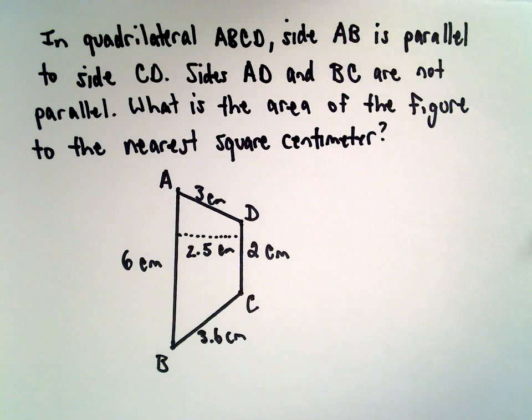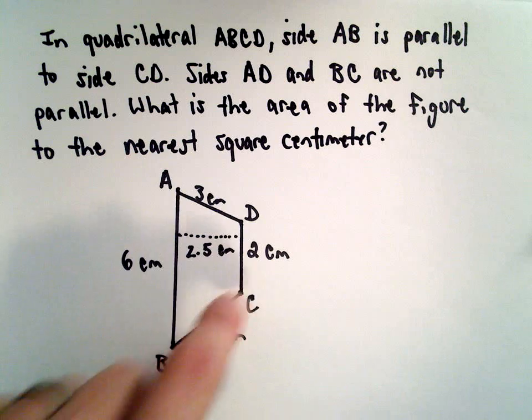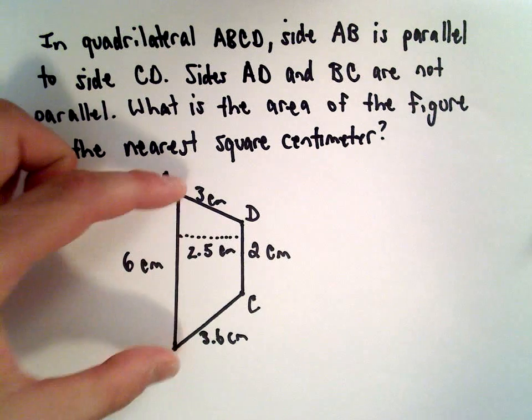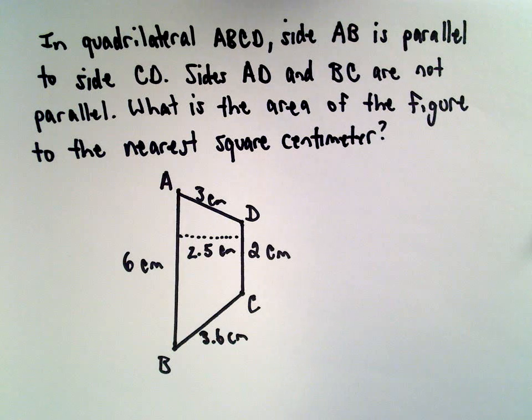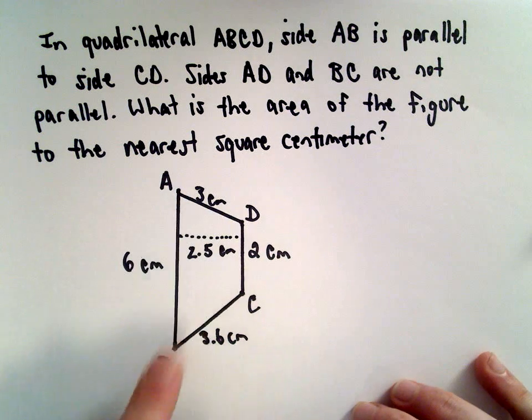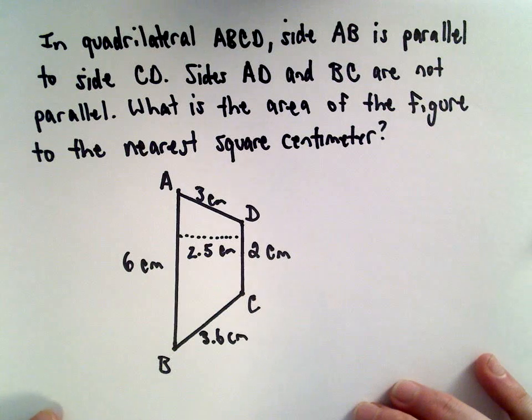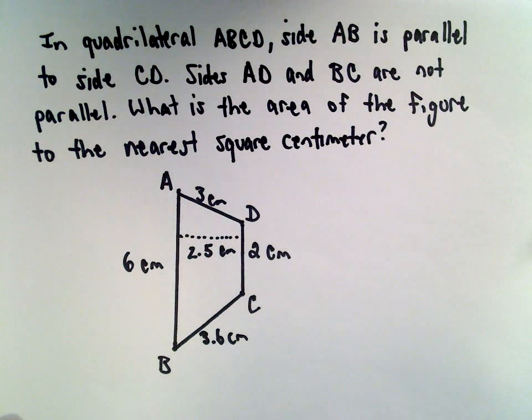So in this example, we have a quadrilateral A, B, C, and D. And side AB is parallel to side CD. And the sides AD and BC are not parallel. We want to know what's the area of the figure to the nearest square centimeter.